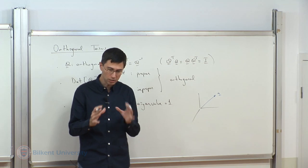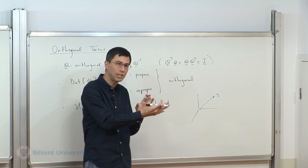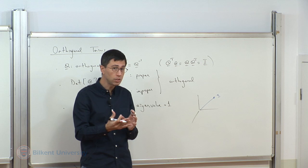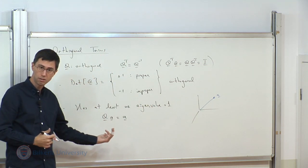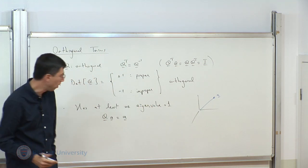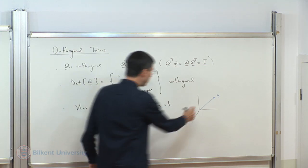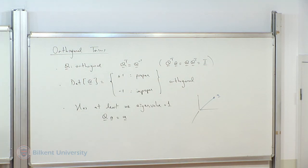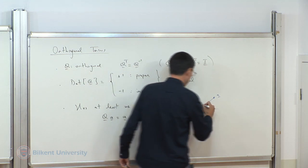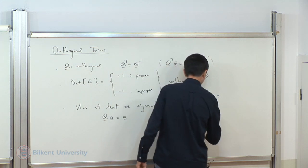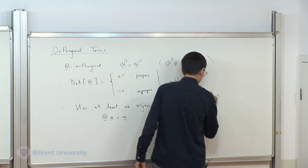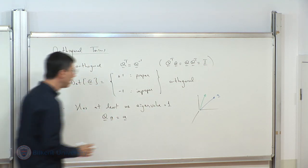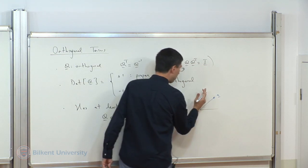So that is a proper orthogonal tensor. What about an improper one? It still has to do with rotation, but a rotation you possibly cannot physically obtain. The intuition is correct: it has to do with a mirror. If you look at yourself in the mirror, things are reversed—a simple transformation where you turn inside out in some sense. It is not something you can physically obtain through rotation, but it is a reflection.